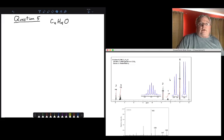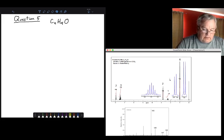Okay, let's take a look at question number five. Question number five gives us an NMR spectrum and a mass spectrum and a molecular formula.